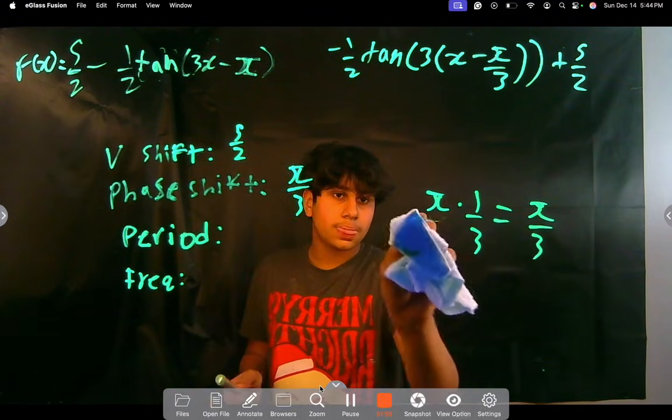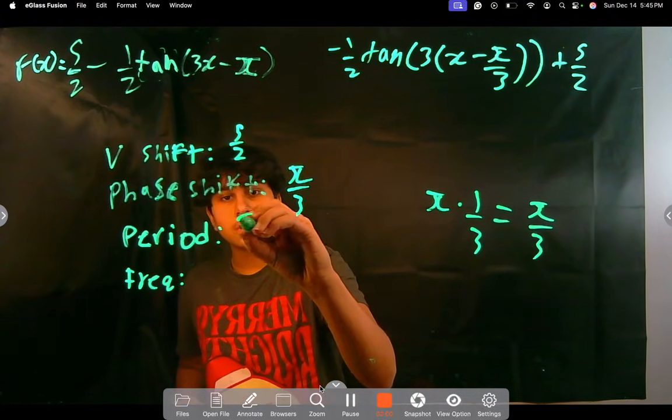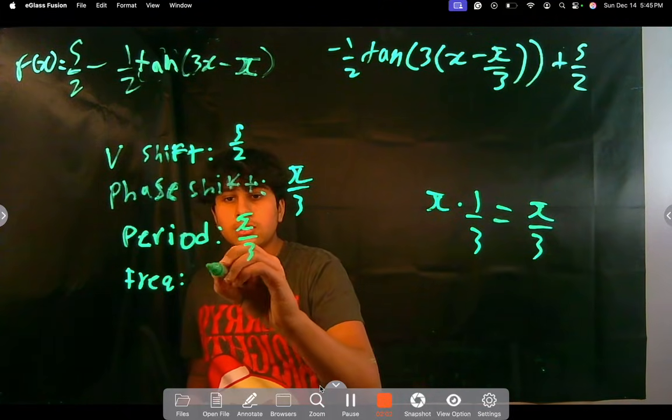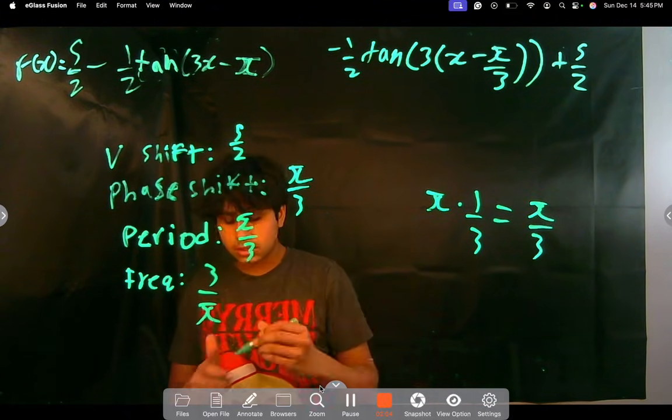So our period here is π/3, and our frequency is going to be 3/π because it's always the reciprocal of that.